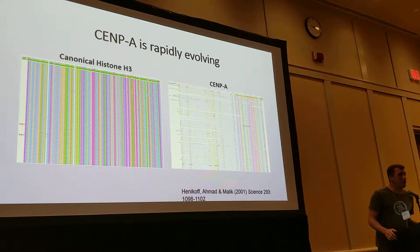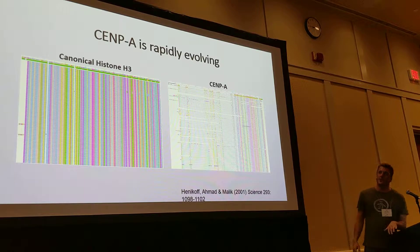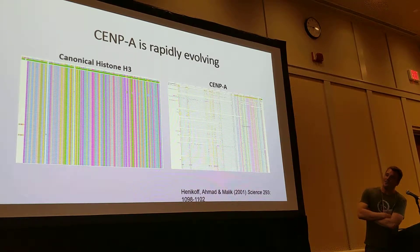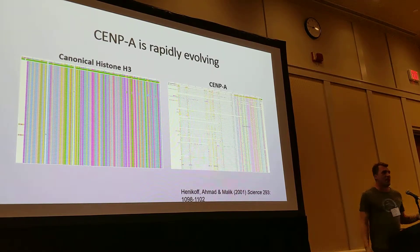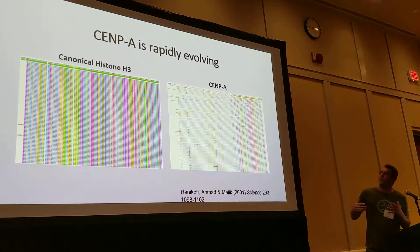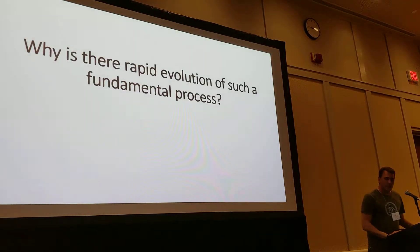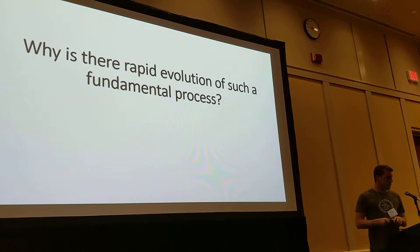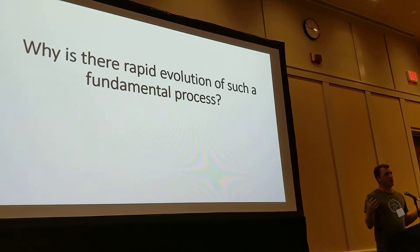But CENP-A is very rapidly evolving. You can see that canonical histone H3 from yeast to humans — that's an amino acid alignment — is highly conserved. Over here to the right is an alignment of CENP-A, and there's lots of stuff that doesn't align. It's very rapidly evolving. So this begs the question: you have a highly conserved process, but why is there such rapid evolution of the components of that process — of centromeres?